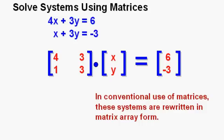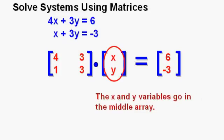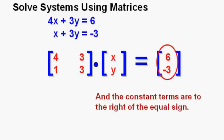In conventional use of matrices, these systems are rewritten in matrix array form. The coefficients of the x and y terms are arrayed here on the left. The x and y variables go here in the center in this order, first variable on top and second variable on the bottom. And finally, the constant terms or numbers are arrayed to the right of the equal sign.